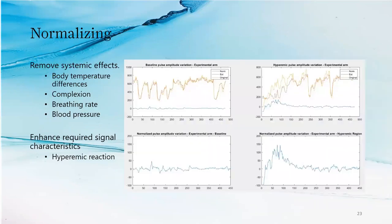Another step that we took was normalizing the readings that we had taken so that external factors are removed. You can see that the top graph — the blue, the yellow, and the red — the PPG recordings have some external factors. After normalizing, we can see that the control arm has a cleaner line and the experimental arm has the expected variation, which can be visibly seen.